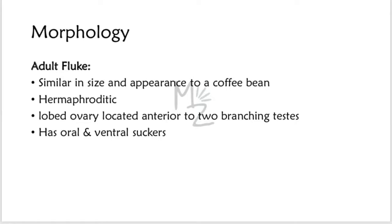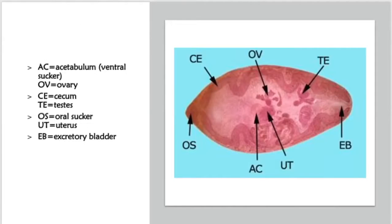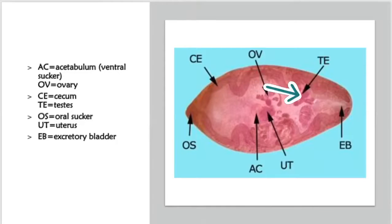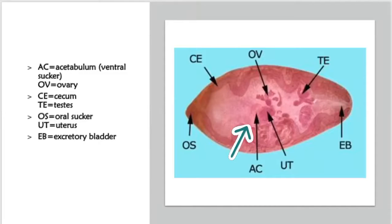It has an oral and a ventral sucker. On the right side you can see it is reddish brown in color. The oral sucker is visible at one end. On the ventral side you can see the excretory bladder, and on the anterior side the cecum — both are excretory organs. OV refers to the ovary and TE refers to the branched testes. The ovaries are present anterior to the branched testes. Near the ovaries, UT represents the uterus, and AC is the acetabulum.